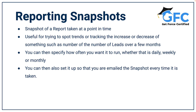When configuring a reporting snapshot there are a few steps you must take. You must first create a custom object to store the snapshot, and on that object you'll need fields to store the information. When creating the snapshot you specify who the running user is, what the source report is, where you want to save the report, and the fields that you want to map. Once you've created it, you can then specify how often you want it to run, whether that is daily, weekly, or monthly. You can also set it up so that you email the snapshot every time it's taken.